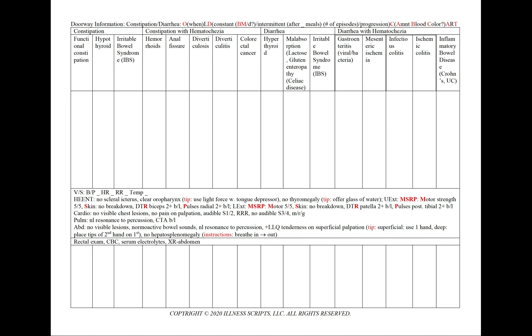To characterize the constipation or diarrhea, since it is a bodily fluid, we use the mnemonic A, B, and C — for amount, blood, and color. For our patient note, we include aggravating and alleviating factors and treatments tried, and if there are none, we include that as well. To receive full credit for all cases, we should order a rectal exam, CBC, serum electrolytes, and an X-ray of the abdomen.